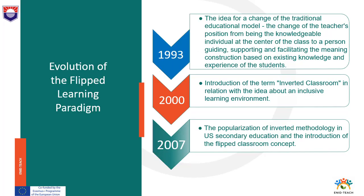Over the last decades, flipped learning has evolved and grown in many ways and on many levels. In 1993, Alison King emphasized the urgent need to change the traditional educational model in her study 'From Stage on the Stage to Guide on the Side.' According to her, this means changing the position of the teacher from being the knowing individual at the center of the class to one who guides,